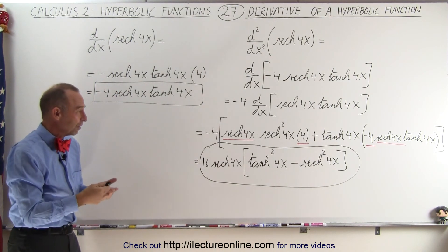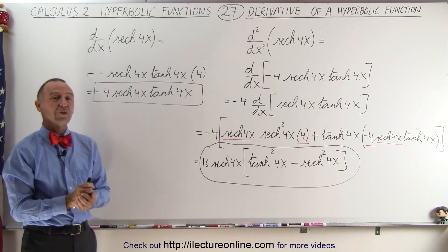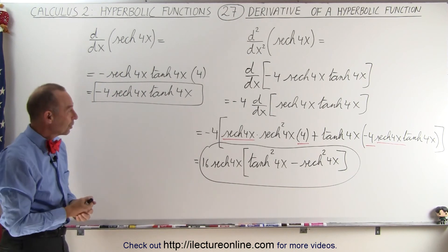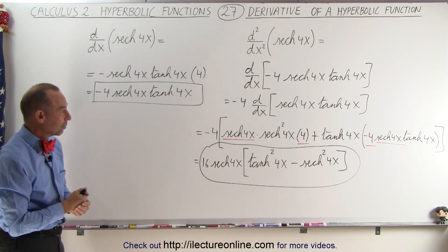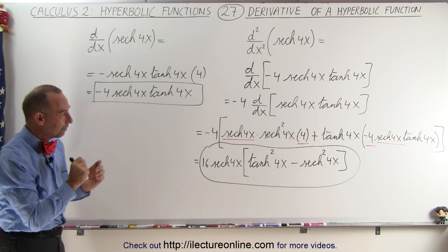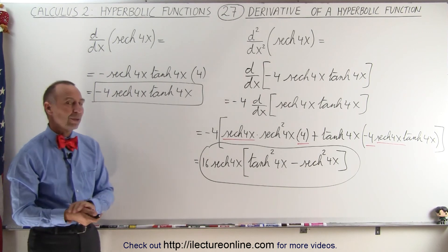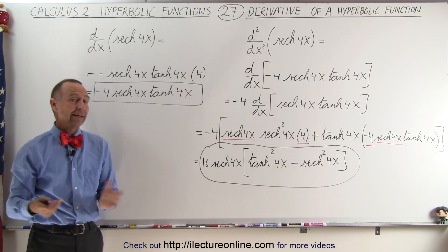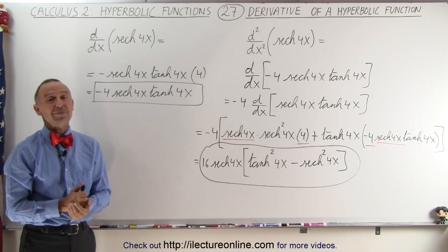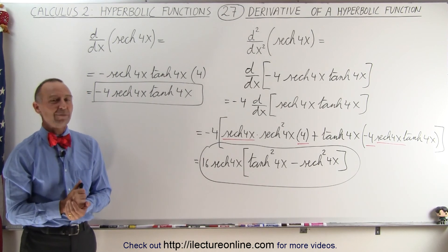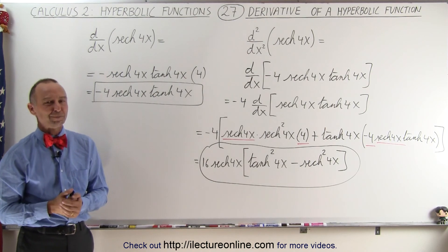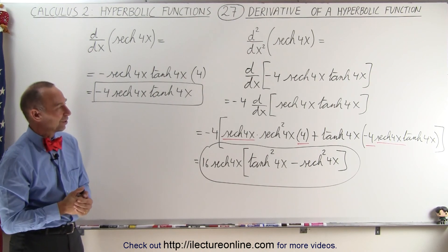You can see that the rules are fairly similar to those for regular trigonometric functions — there are just a few differences, such as a negative sign here and there. Other than that, you use the very same technique to find the derivative, and that's how it's done.